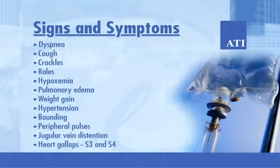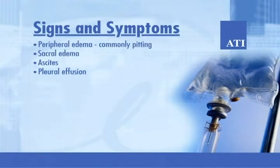Signs and symptoms include dyspnea, cough, crackles, rales, hypoxemia, pulmonary edema, weight gain, hypertension, bounding peripheral pulses, jugular vein distension, heart gallops S3 and S4, peripheral edema commonly pitting, sacral edema, ascites, and pleural effusion.